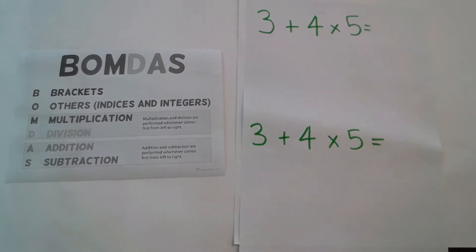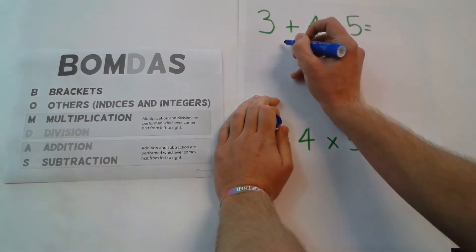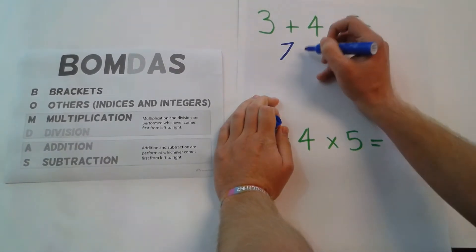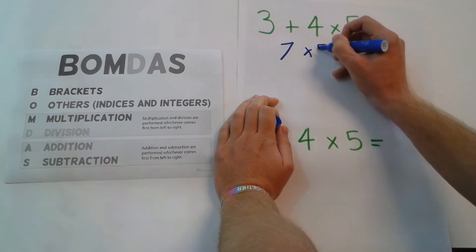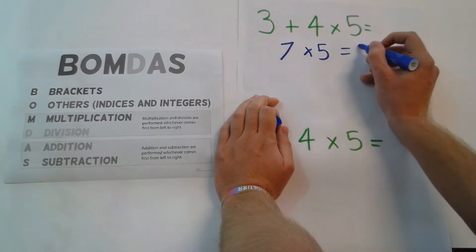Now there's two ways you could solve that. You can do this way. So you can do 3 plus 4 first, which equals 7, times by 5, which equals 35.